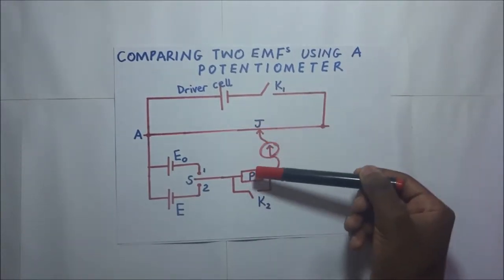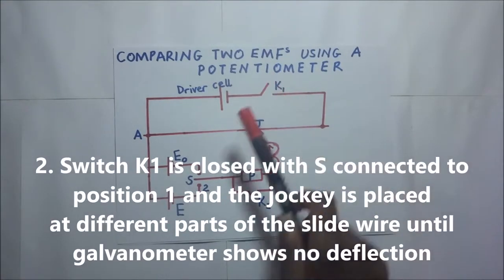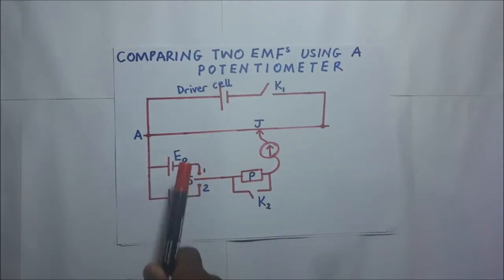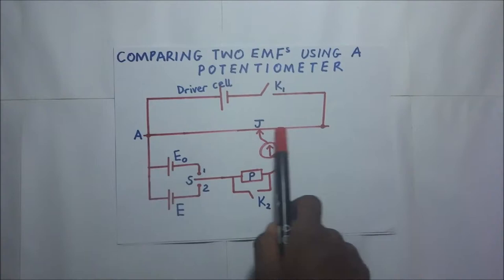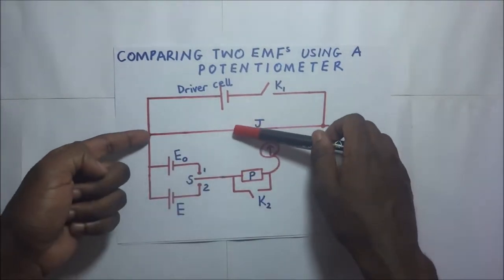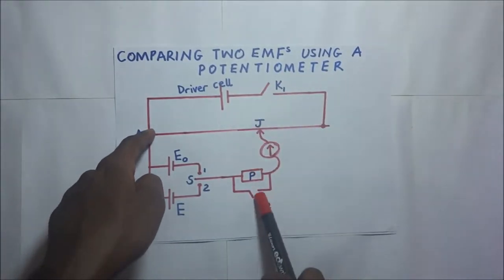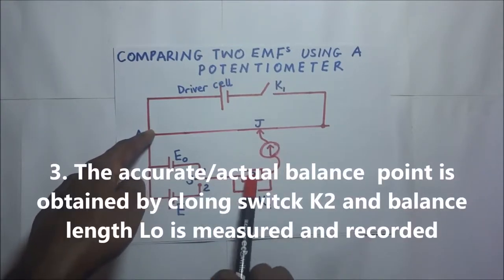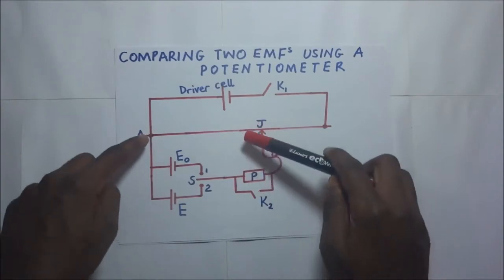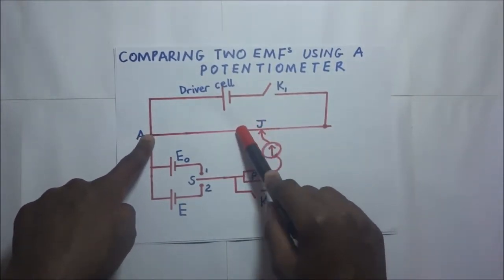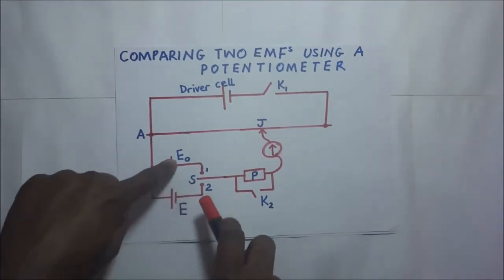To begin our experiment, we close switch K1 and put switch S to position 1. We then slide the jockey along the wire until we obtain an approximate balance point — approximate because the protective resistor is still in the circuit. After getting the approximate balance point, when the galvanometer is not deflecting, we close switch K2 to remove the protective resistor, then slide the jockey again to get the accurate balance point.